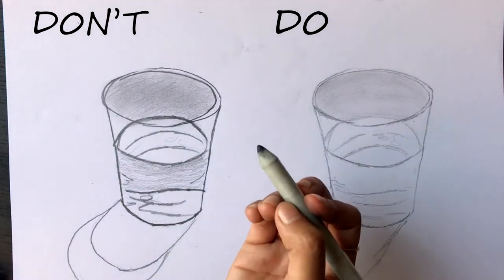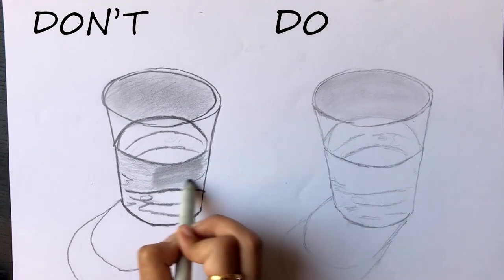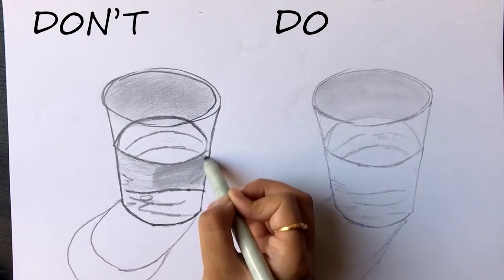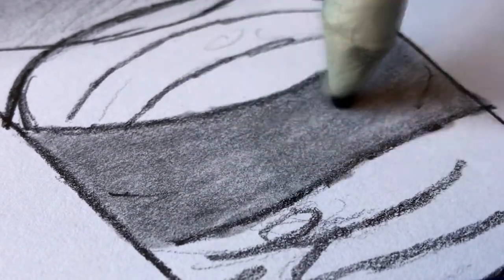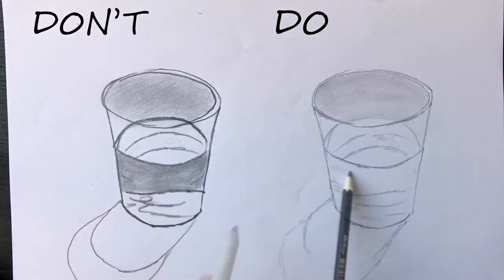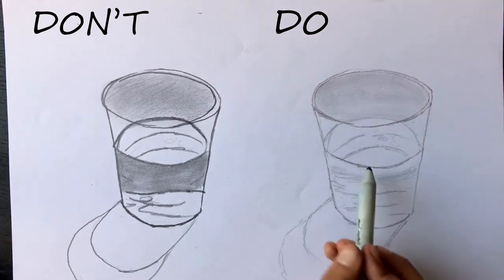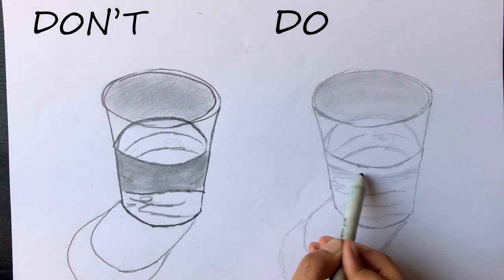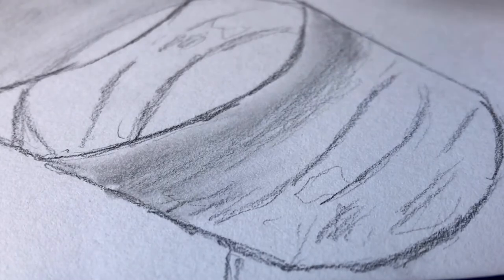A common mistake people make when using paper stump is by not separating the different values, or the light and dark areas. They also tend to move the paper stump back and forth and in different directions, causing the area to be all the same color. Instead, what you want to do is shade in the darker areas and then blend towards the lighter ones. Move the paper stump in the same direction as the strokes you have made earlier, to have a smooth and even transition.